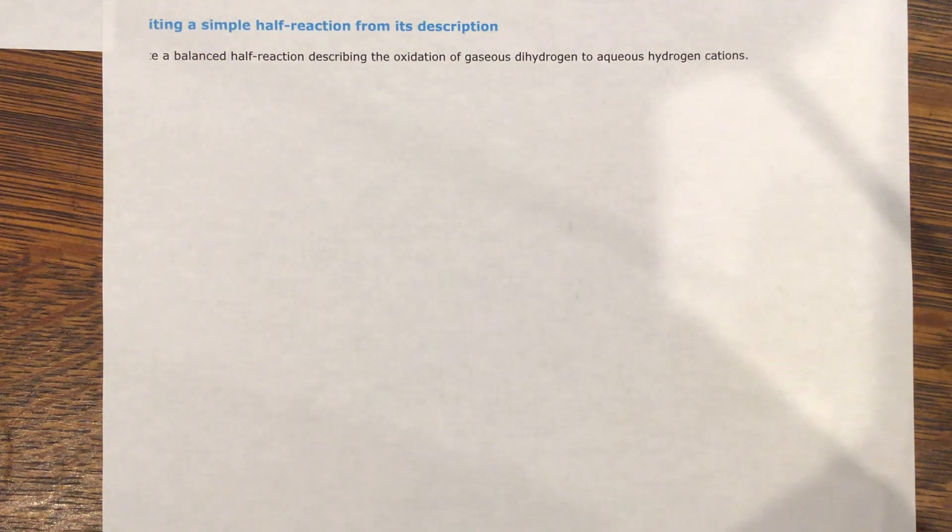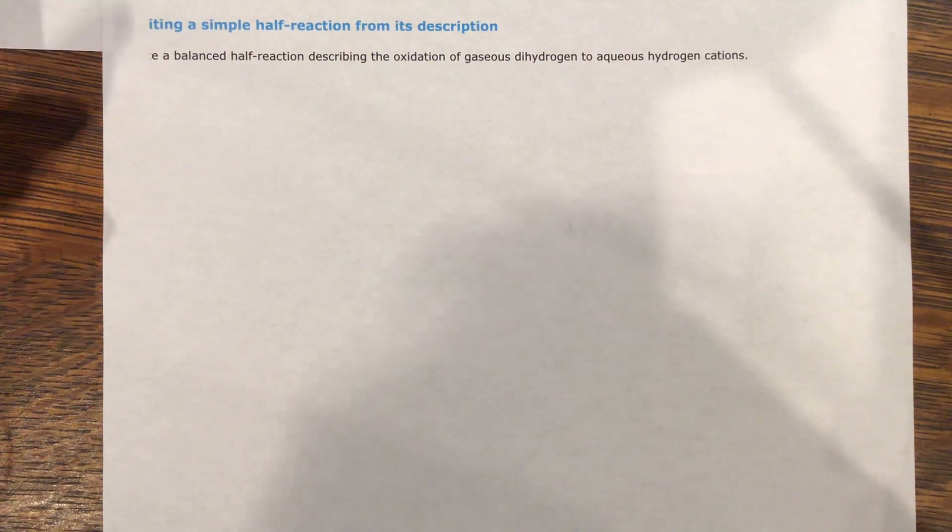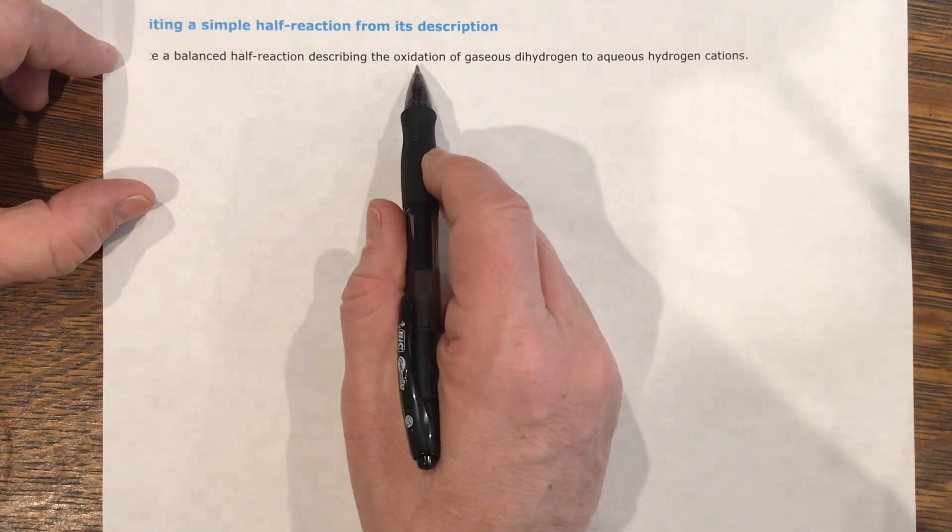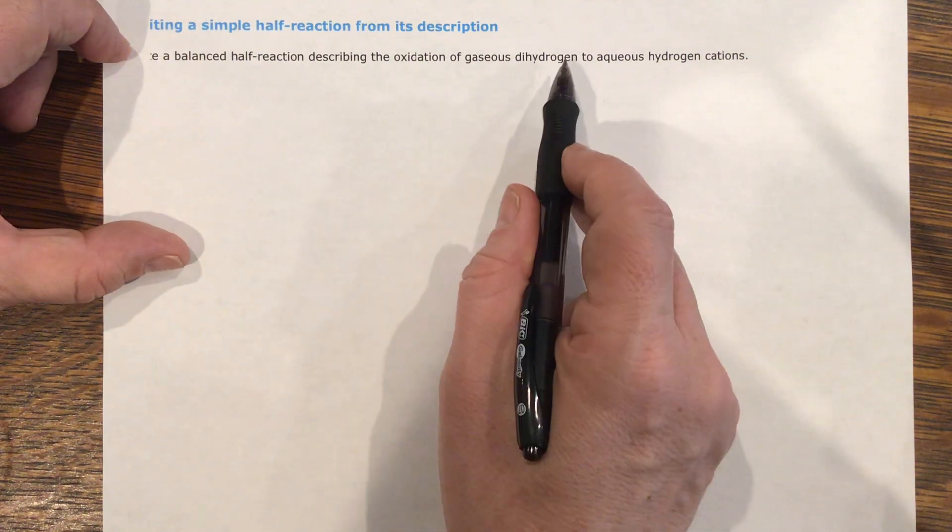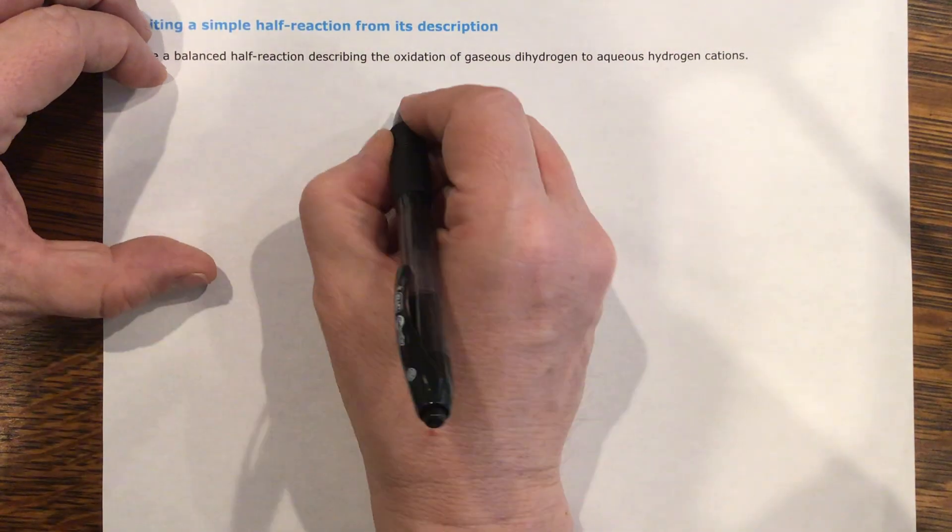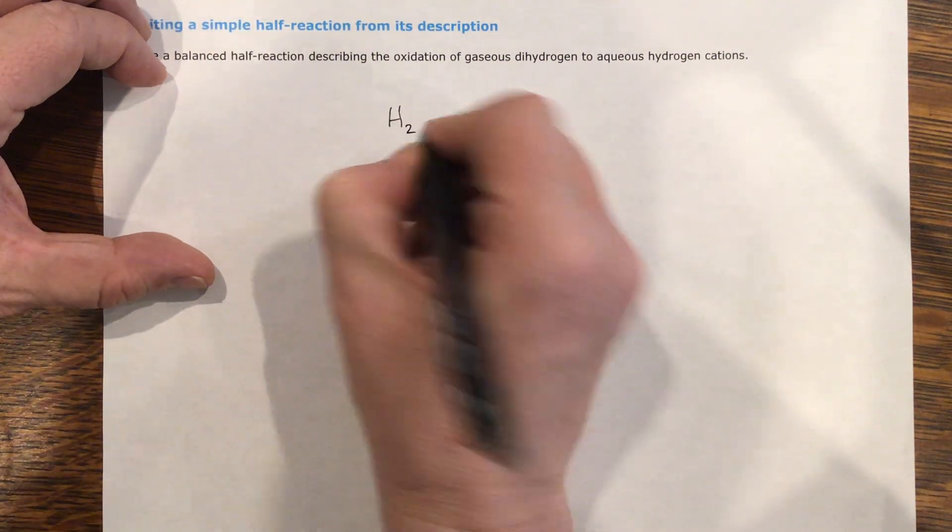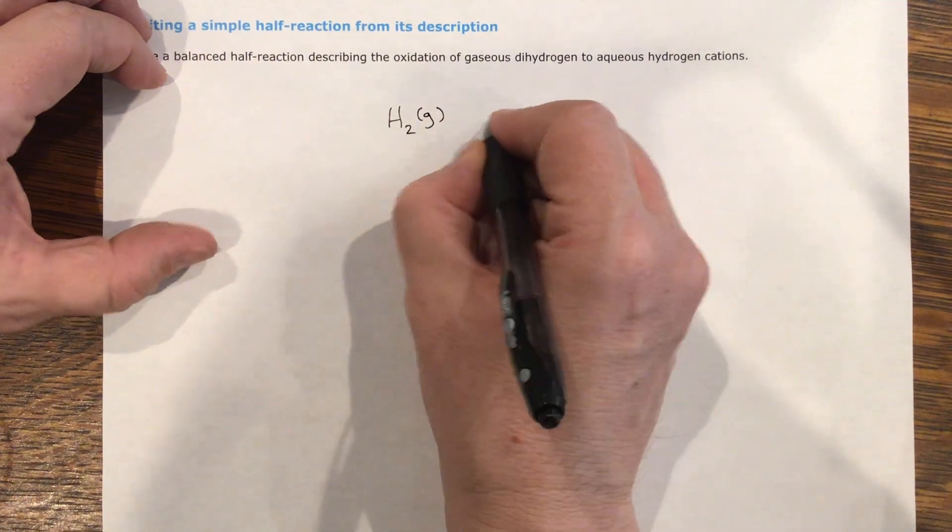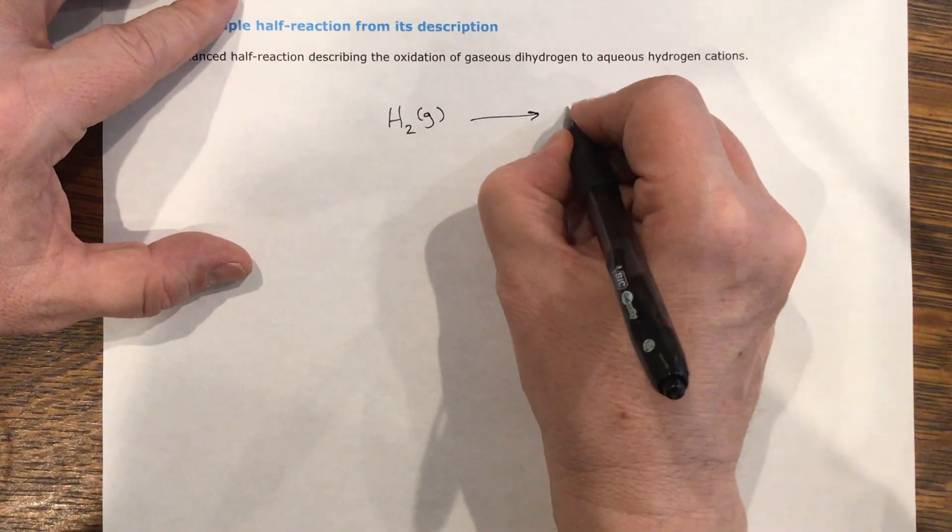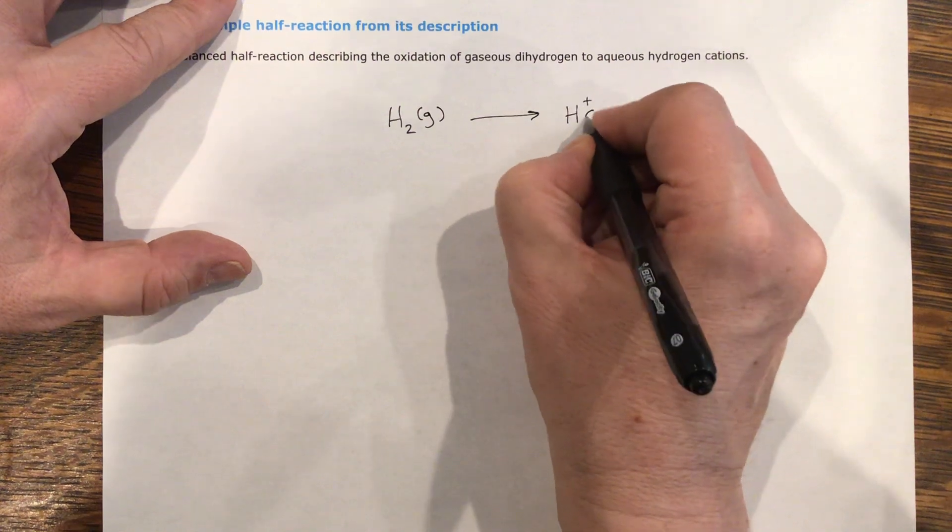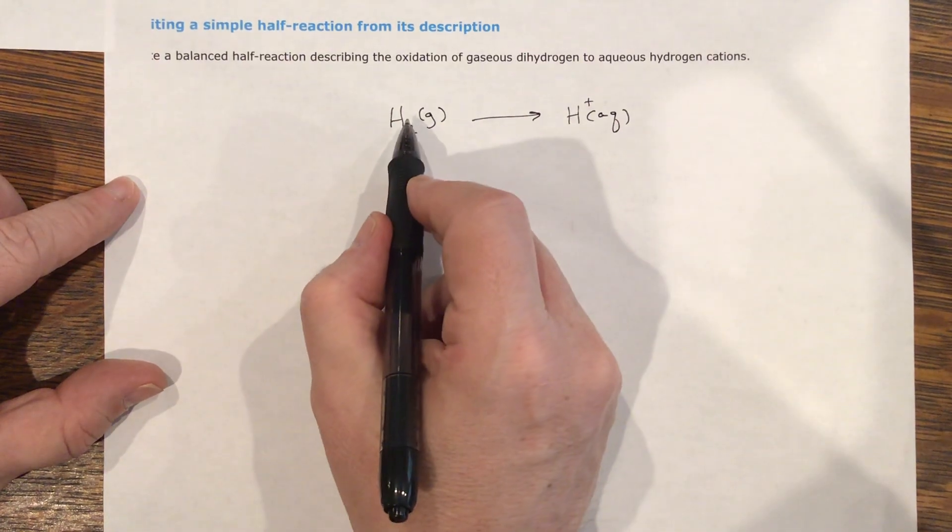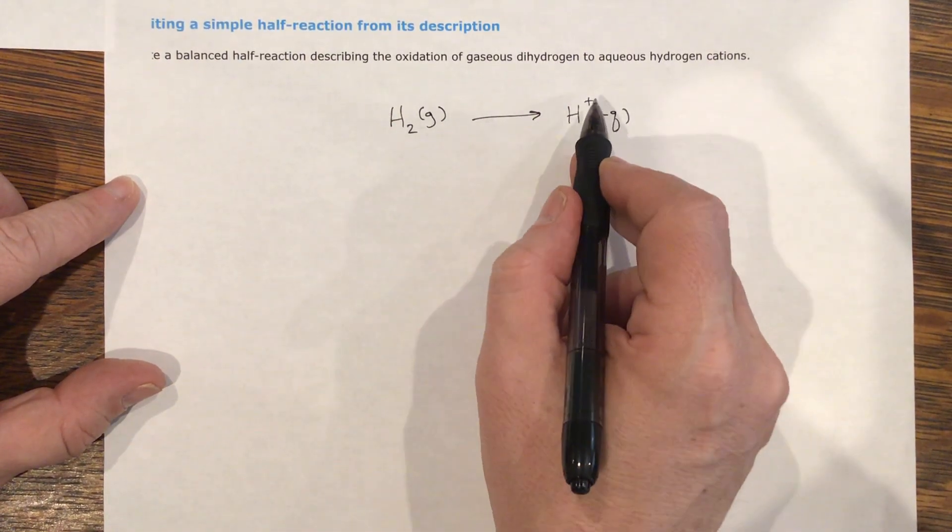So instead of giving it to you, they're going to read it to you. They want you to write a balanced half reaction describing the oxidation, so we're only doing the oxidation step, of gaseous dihydrogen to hydrogen cations. Gaseous dihydrogen just means H2 in the gas form, and it is going to oxidize into H+, which is aqueous. That's all they're saying, gaseous dihydrogen to hydrogen cations.